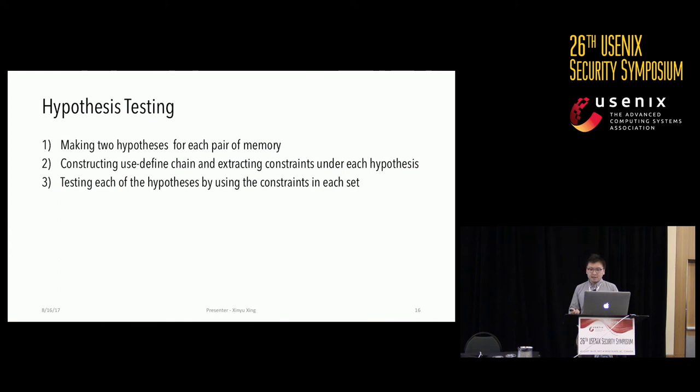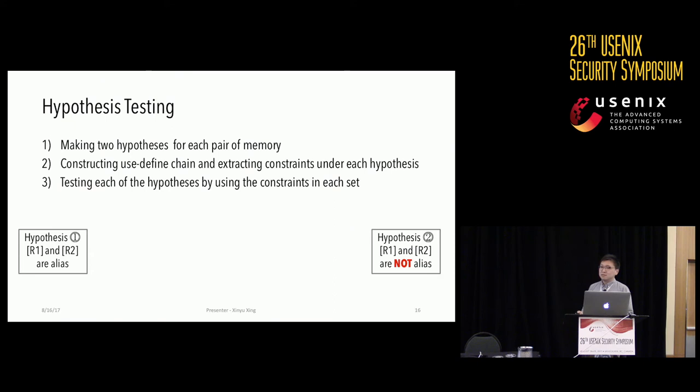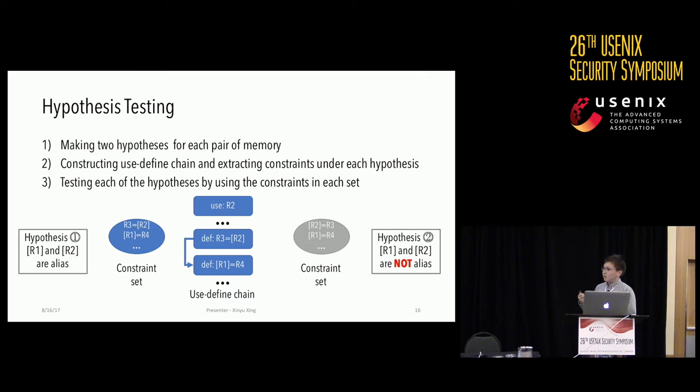To address memory alias issues, we use hypothesis testing. For each pair of memory accesses, we make two hypotheses: one assumes the pair is not aliases, while the other assumes they are. We then construct use-def chains and extract constraints under each hypothesis. Using the constraints, we test each hypothesis and decide whether to accept or reject it.